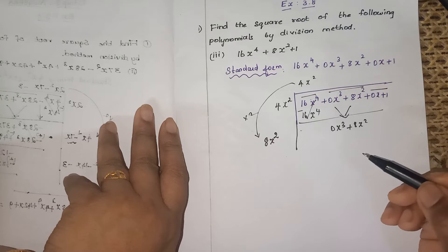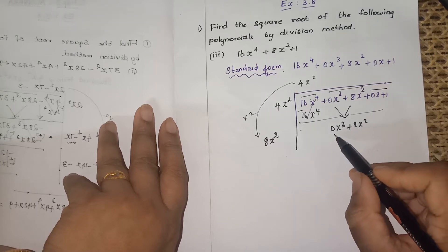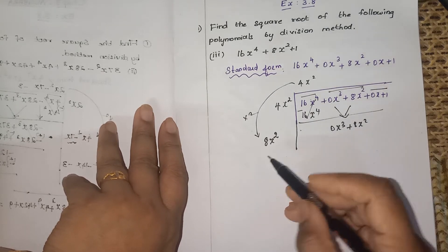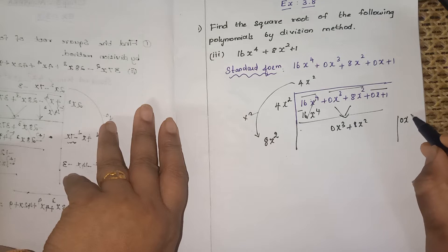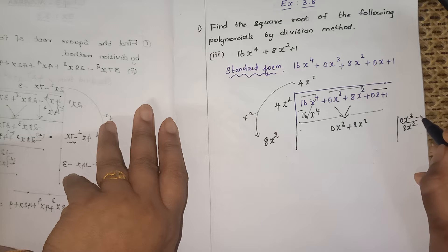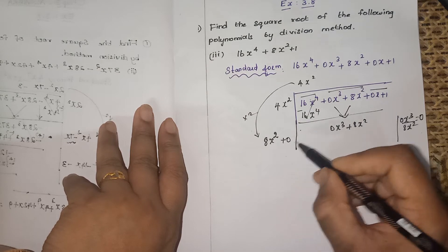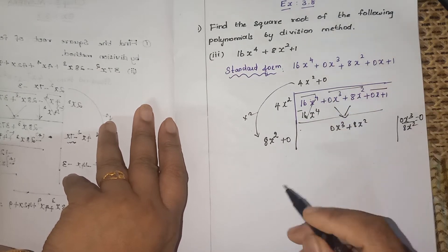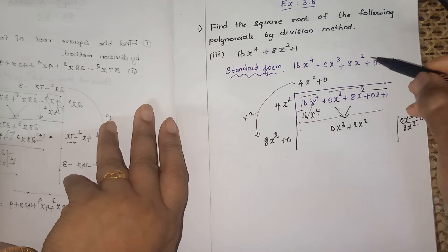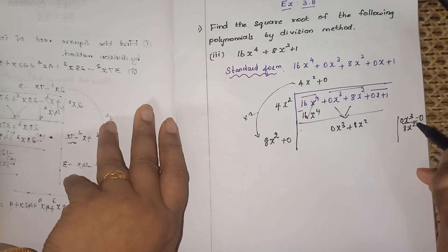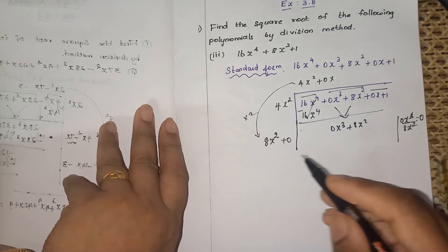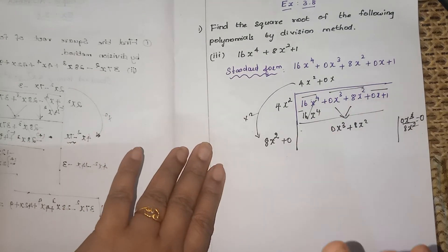Next, what will you do? This term 0x cube divided by 8x square. 0x cube means 0 only, so 0 by 8x square is again 0. So plus 0 will come here also. You can write it like plus 0x only.